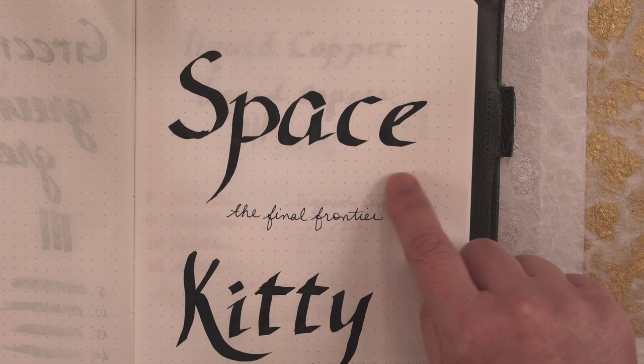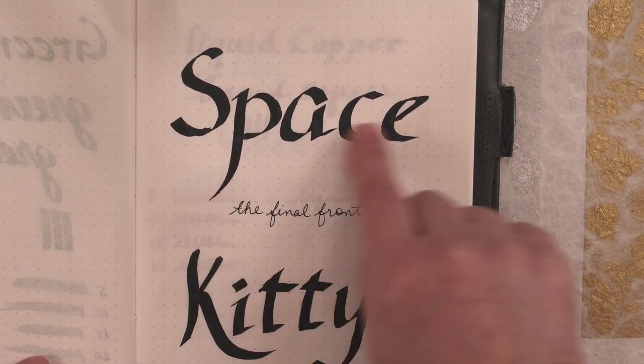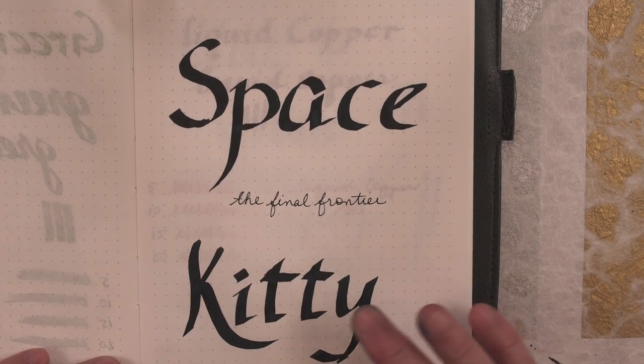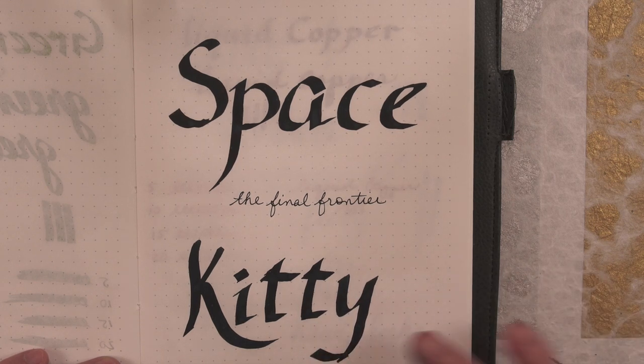And next up is Nebula Space Kitty, which is a bluish black ink and blue shimmer with a little bit of purple sheen.